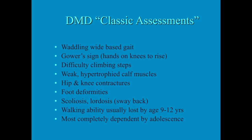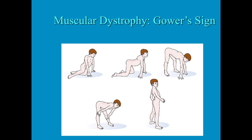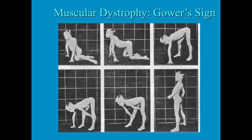Most of these kids lose the ability to walk completely by early teenage years, and by the end of adolescence they are completely dependent on others. The only thing they can do on their own is breathe, which is the next concern — that they will lose the ability to breathe. Here is a picture of the Gower sign: they sit on the floor, get onto their knees, push their pelvis up, then walk their hands up their knees and thighs to stand. A real child in the picture demonstrates this and you can see the muscle wasting.